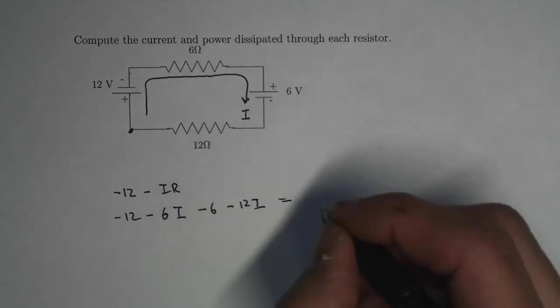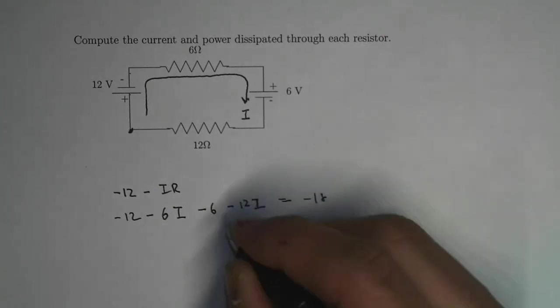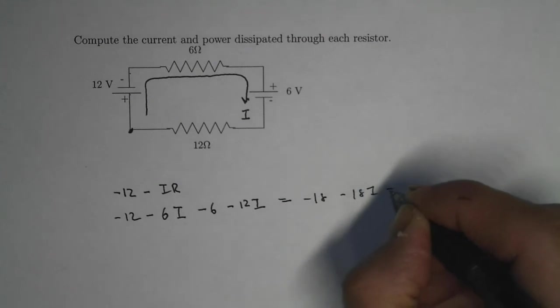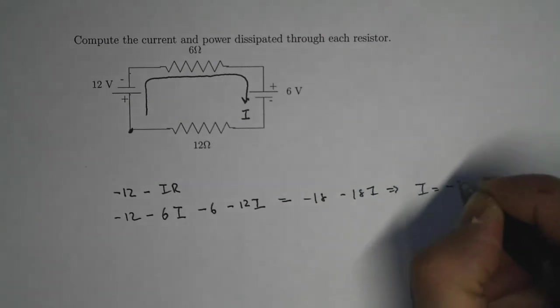So all together, this is just going to be minus 12 minus 6 is minus 18. Minus 6 minus 12I is going to be minus 18I, which means that I equals minus 1.